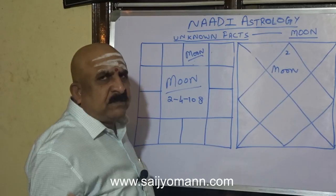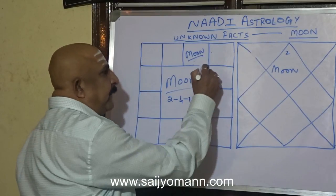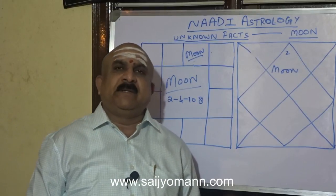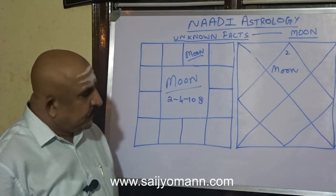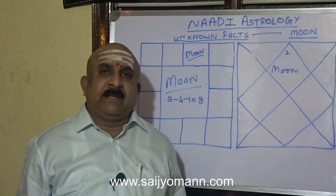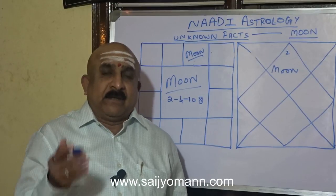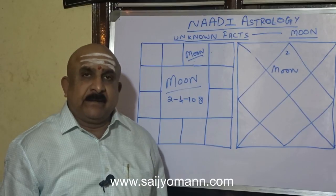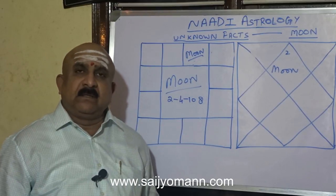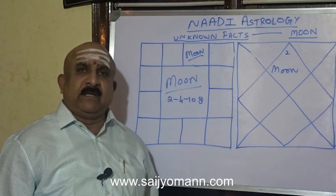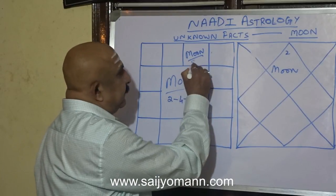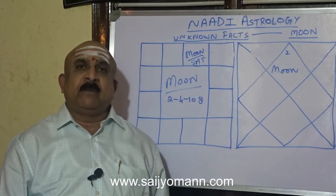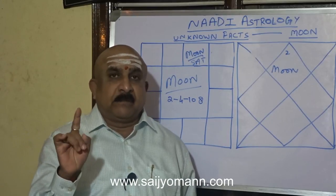Rahu and Ketu both give malefic results in the 2nd house. After the 2nd house, the happiness part of the mother — we look at the 4th house. With Sun and Moon together, she will be strong, ruling the family. Now if we put Saturn, the mother of the native will have a lot of problems in her childhood days.